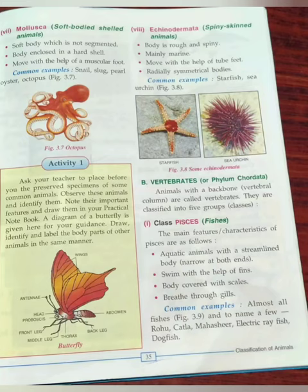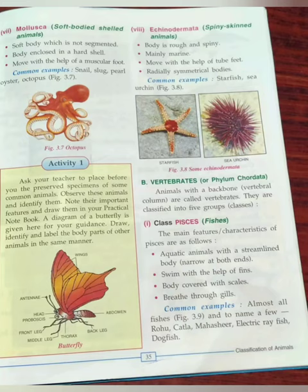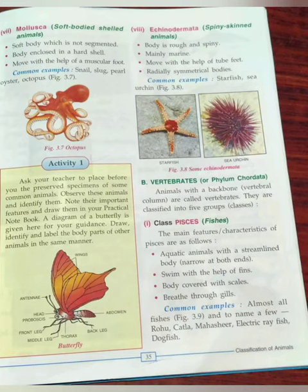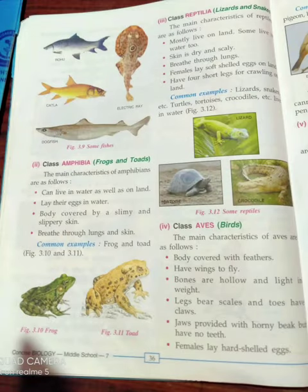Now we move to vertebrates — animals with a backbone. They are classified into five groups or classes. Class Pisces, or fishes: they are aquatic animals with a streamlined body, narrow at both ends. They swim with the help of fins, their body is covered with scales, and they breathe through gills. Common examples include rohu, katla, electric ray fish, and dogfish.